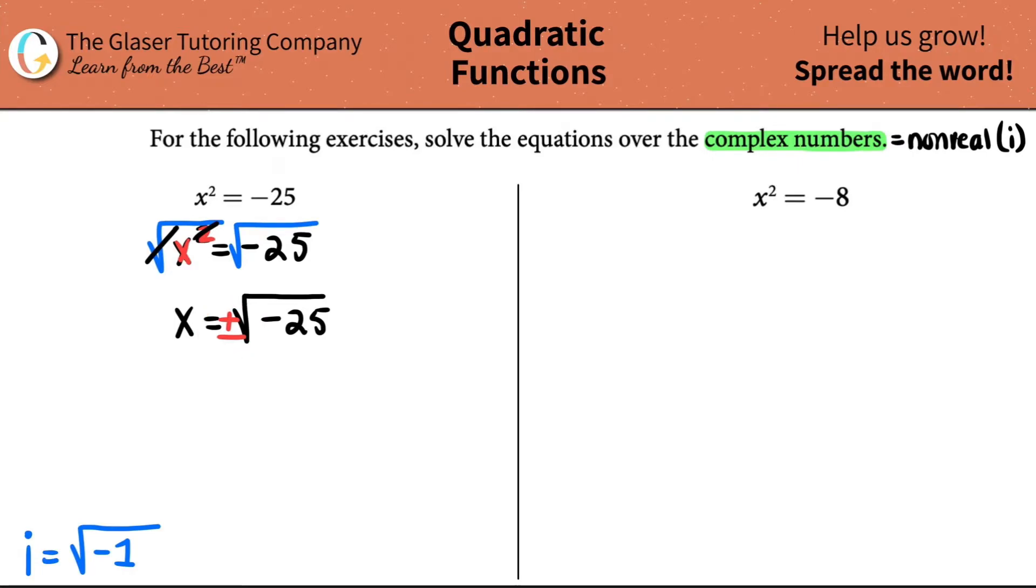Now we just have to deal with what's going on inside, right? A negative 25. We can't have a negative value in our square root. That's going to be a complex number. It's going to be non-real. So we have to break this up.